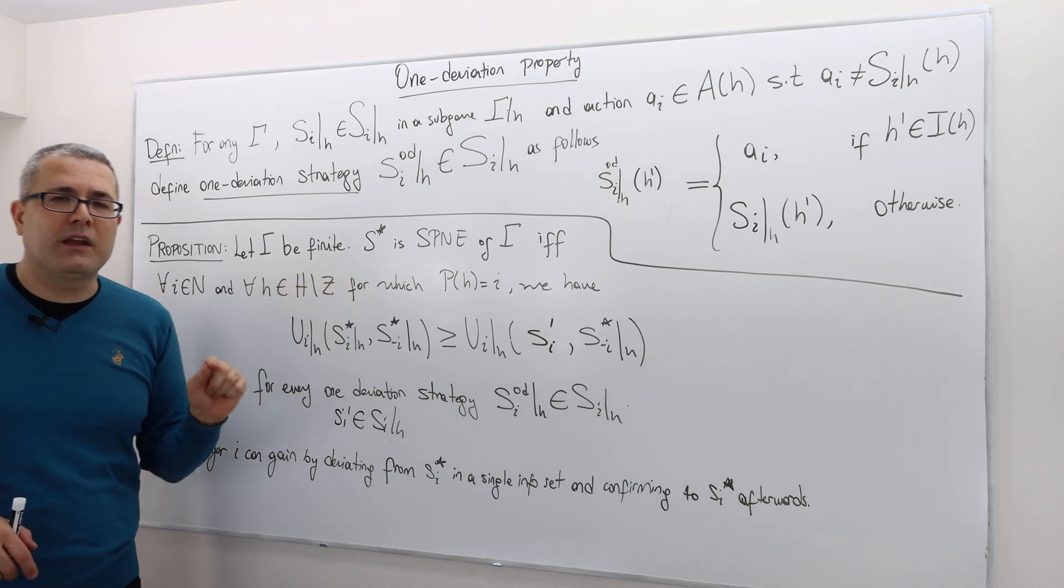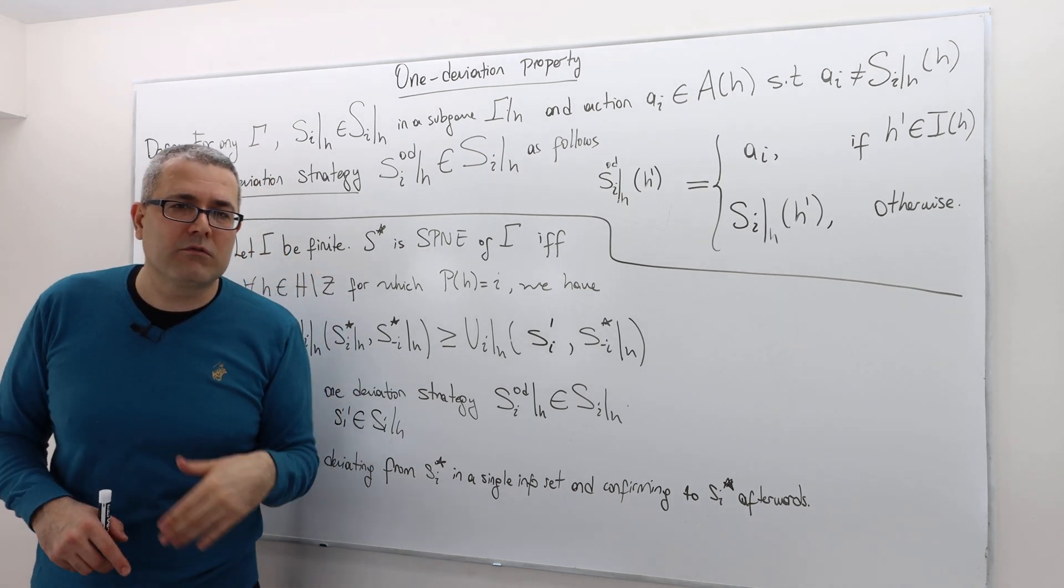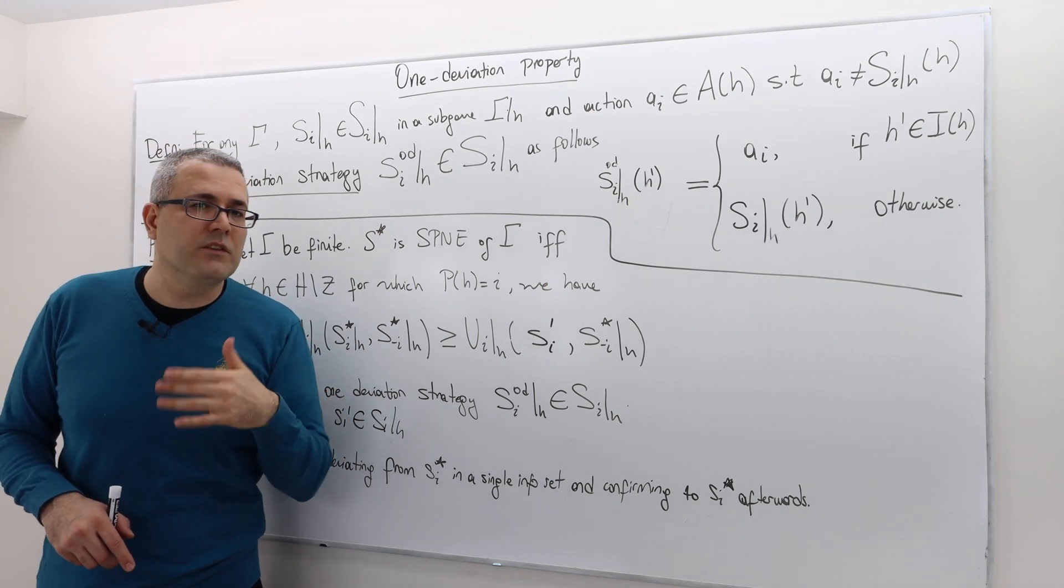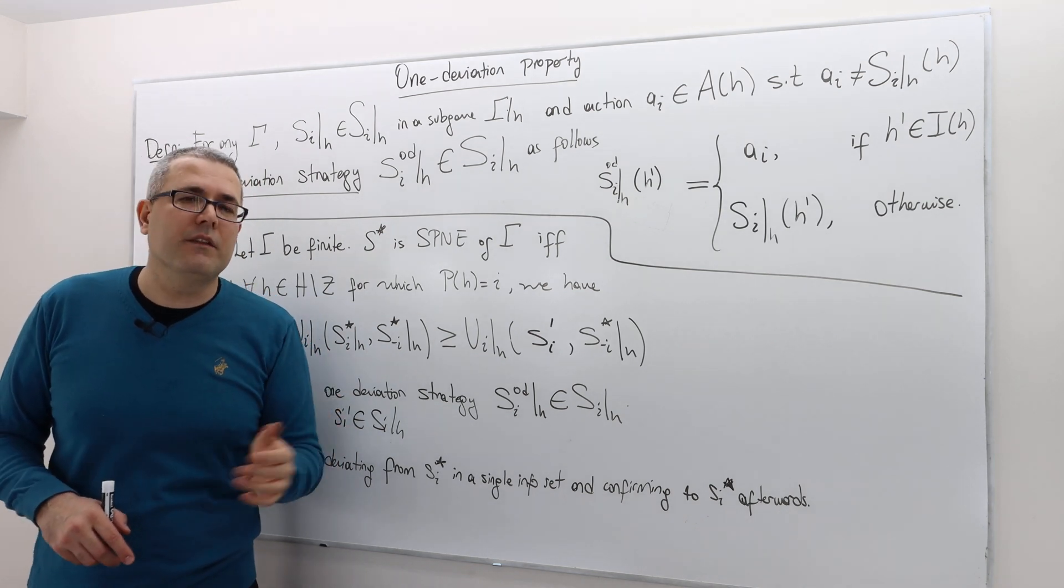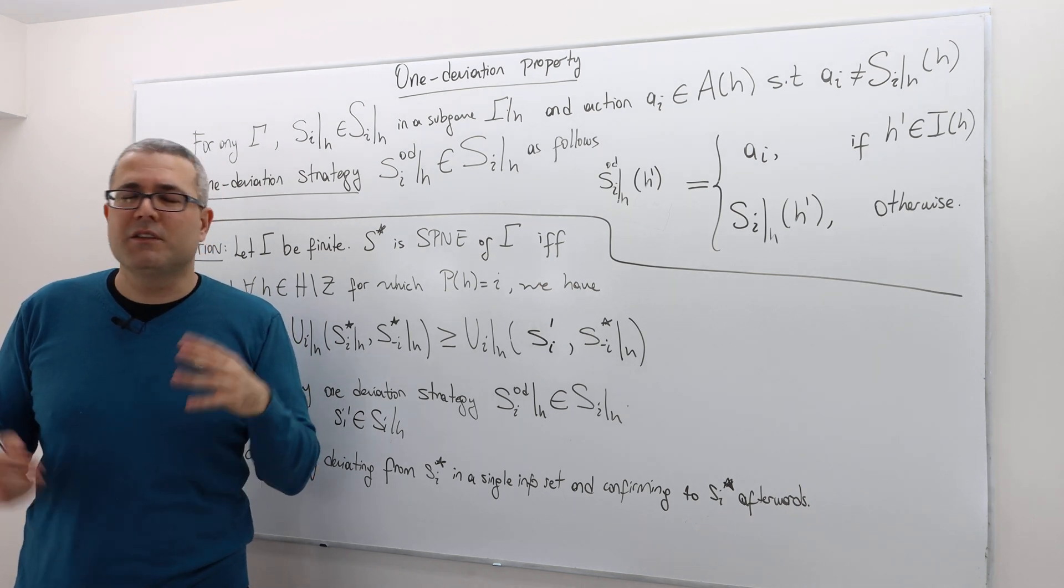but what I would like to underline before moving on is the following. This proposition is true for finite games, but in fact, we are going to be using it for infinite horizon, repeated games, Rubinstein's alternating offer bargaining games and many other extensive form games, infinite horizon extensive form games.